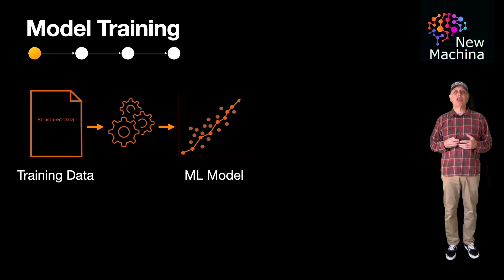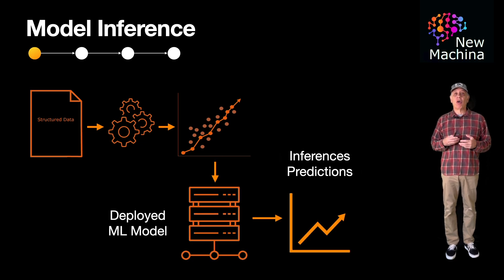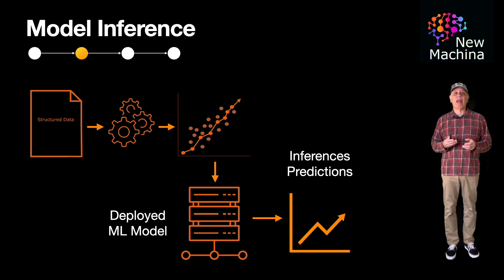Inference is the phase where the trained model is used to make predictions or decisions based on new unseen input data. The inference phase is less resource intensive. It requires fewer computational resources compared to training since it involves applying a learned model to new data.